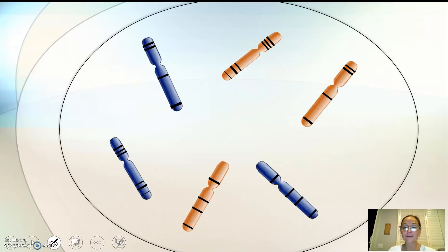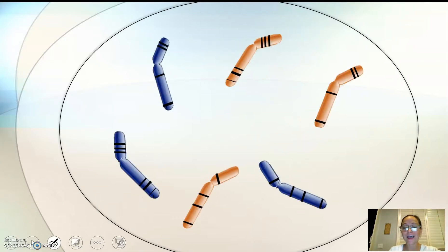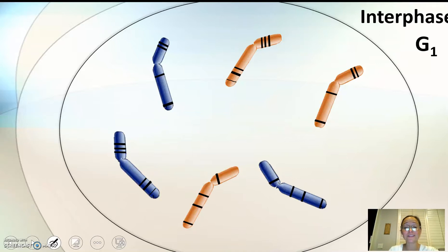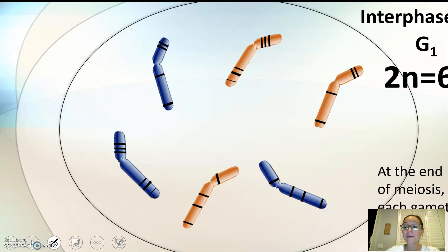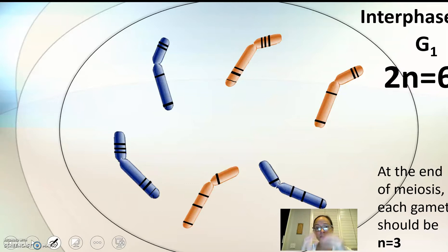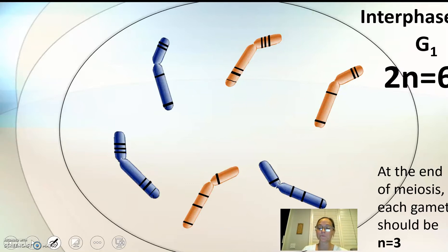So here comes meiosis. We're not working with 46 chromosomes — instead we'll work with just six. Here I have six chromosomes, made a little curved because it makes things easier later. In interphase, in G1, these are what the chromosomes look like. With this, 2N equals 6 — the diploid number is 6. At the end of meiosis, we should have gametes with N equals 3. We're cutting these in half to create haploid cells. I have them color-coded to show which came from the dad and which is the match from the mom, though in reality they're not color-coded in your cells.